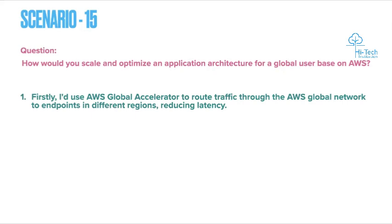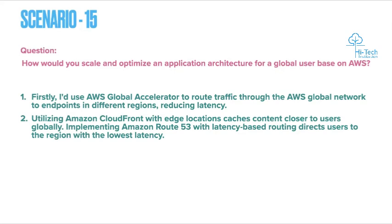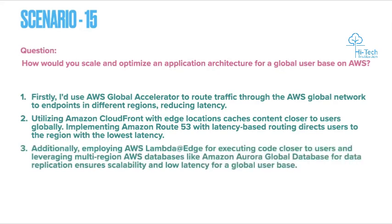Also, utilize Amazon CloudFront with edge locations to cache content closer to users globally. Implement Amazon Route 53 with latency-based routing to direct users to the region with the lowest latency. CloudFront ensures content is available near the user's location, and Route 53 latency-based routing ensures lower latency for all users.